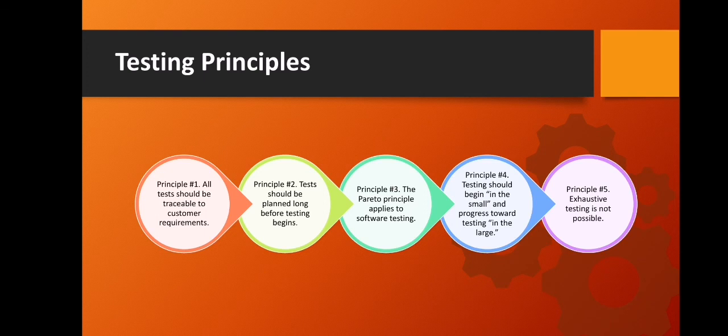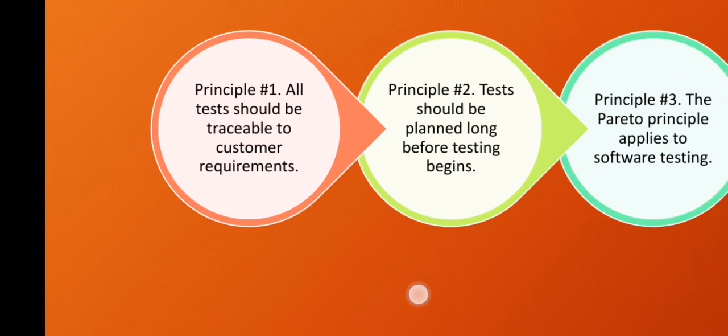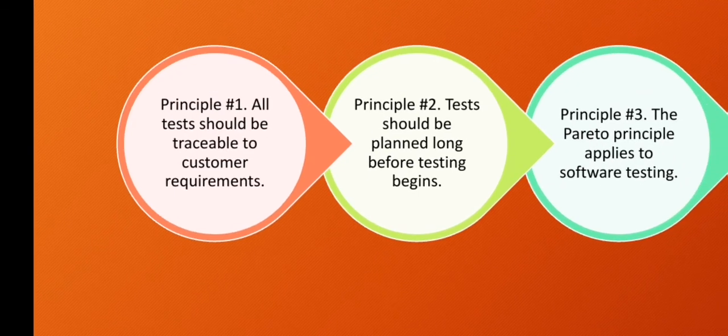We now go to the testing principles. Al Davis suggests the following five principles. Principle one: all tests should be traceable to customer requirements, in addition to structural tests about the logic. Principle two: tests should be planned well before testing begins — even before any code is generated, testing should already begin. Principle three: the Pareto principle applies to software testing, meaning that 80% of errors uncovered will come from 20% of all program components.